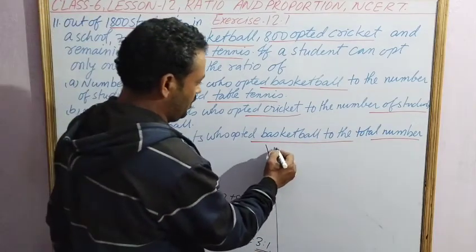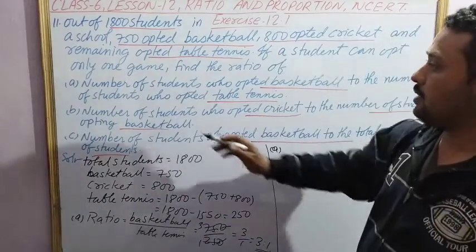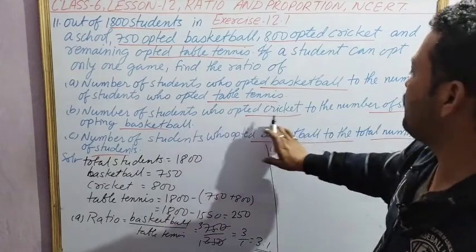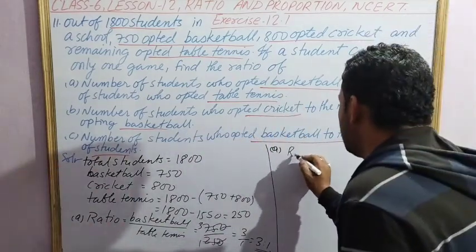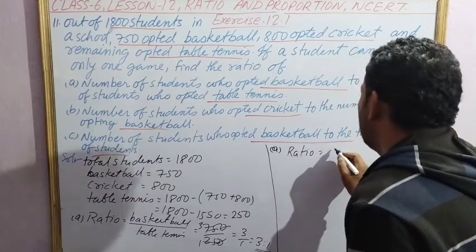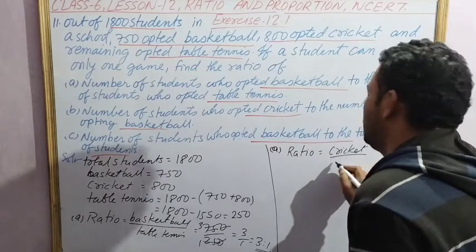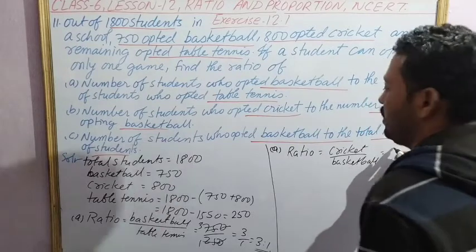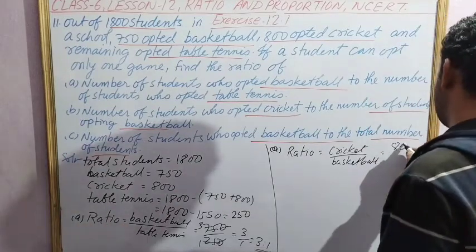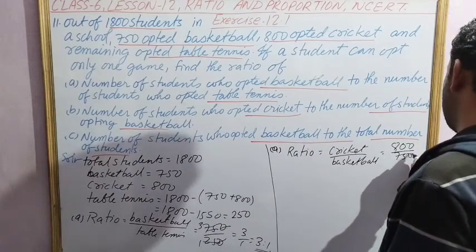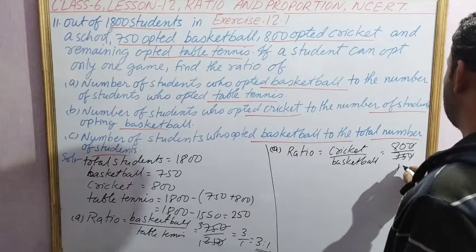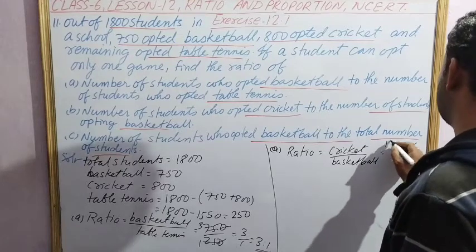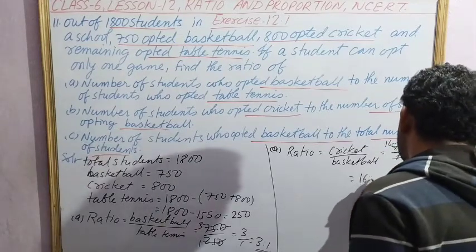Second part, question B: we have to find the ratio between cricket and basketball. So ratio cricket to basketball: cricket is 800, basketball is 750. Divide both by 50: 16 over 15. So ratio will be 16 is to 15.